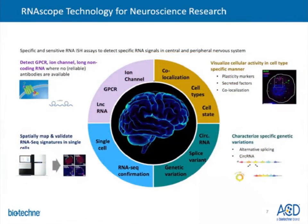RNA scope technology has been widely applied in neuroscience research. Challenging IHC antibody targets such as GPCRs and ion channels can be overcome by looking at RNA in situ. One can also visualize cellular activity and immediate early gene expression in a cell-type specific manner. With single-cell resolution and multiplexing capabilities, RNA scope is well positioned to spatially map and confirm gene signatures identified by sequencing analyses. Additionally, the brain has more splice variants than any other organ, contributing to tremendous cellular heterogeneity, and the BaseScope assay allows interrogation of these splice variants in the tissue context.